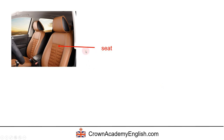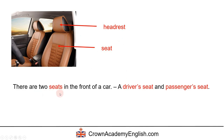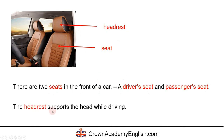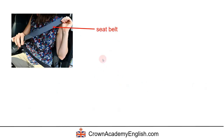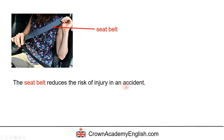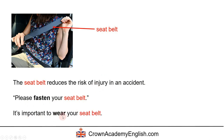This is a seat — obviously this is where we sit. And the top of the seat, this part is called the headrest. There are two seats in the front of a car: we have a driver's seat and a passenger's seat. The headrest supports the head while driving.